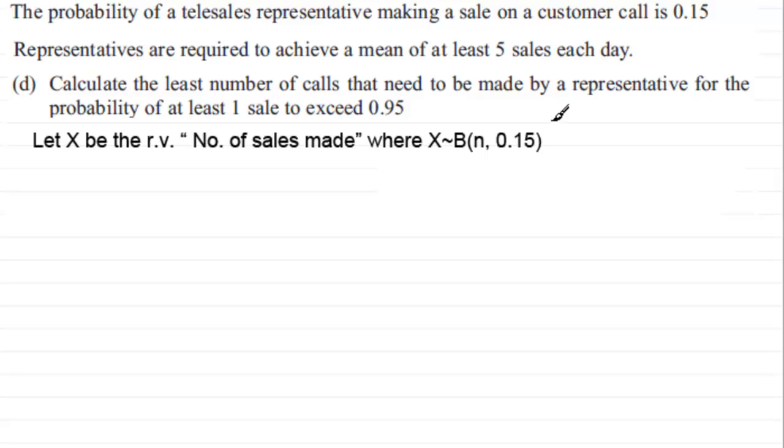Then what we're looking for is this: we're looking for the probability of X being greater than or equal to 1—that's at least one sale—and it's got to exceed 0.95, so it's got to be greater than 0.95.